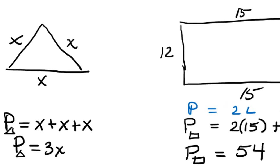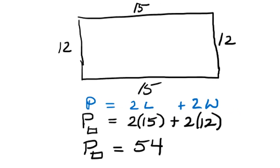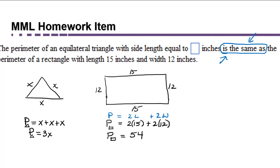The perimeter of the rectangle can be calculated by finding twice the length plus twice the width, or 2 times 15 plus 2 times 12, which adds up to 54. Now we were told that the perimeter of the triangle is the same as the perimeter of the rectangle, which means that the two quantities are equal. Using that fact, we can say that 3x has to be equal to 54.